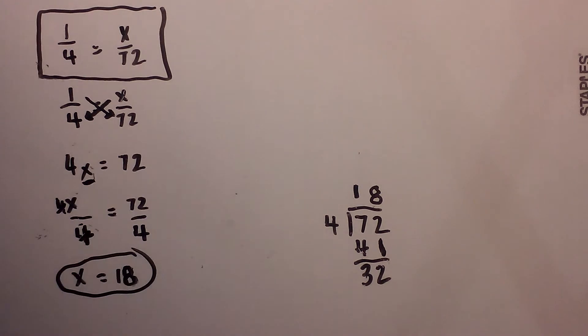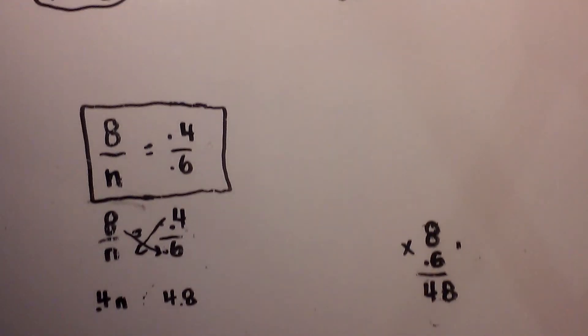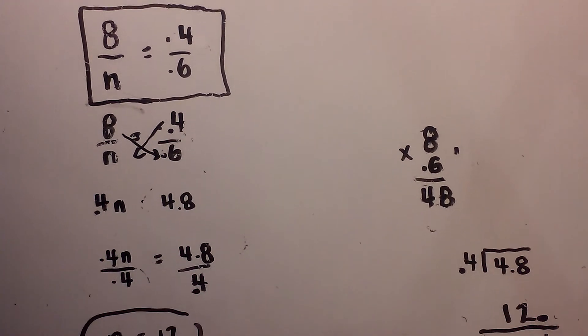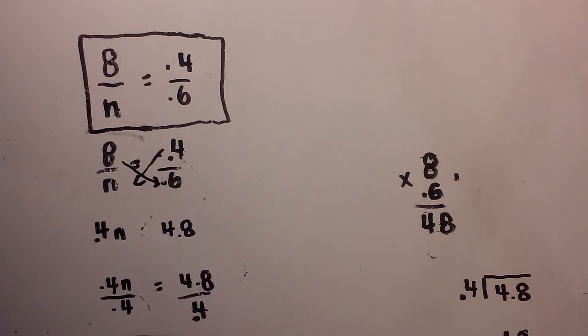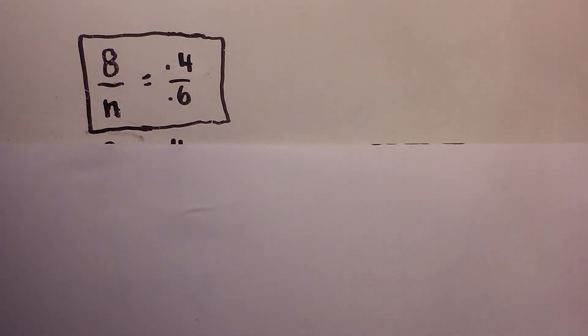Okay, now let's try one in which we have a couple of decimals. 8/n is equal to 0.4 over 0.6. So I will complete my cross.